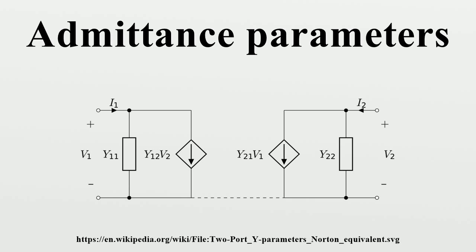Conversion from Z-parameters to Y-parameters is much simpler, as the Y-parameter matrix is just the inverse of the Z-parameter matrix. The following expressions show the applicable relations, where the determinant of the Z-parameter matrix is used.